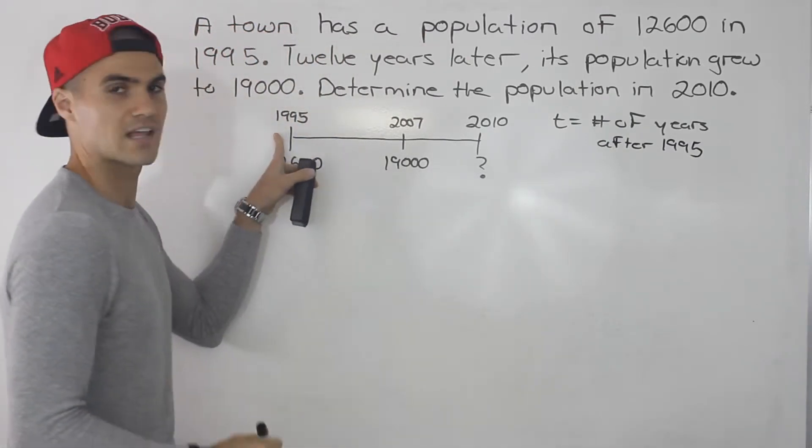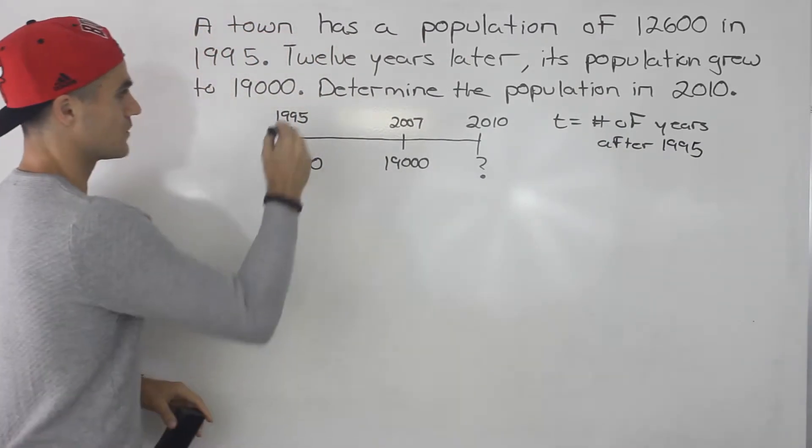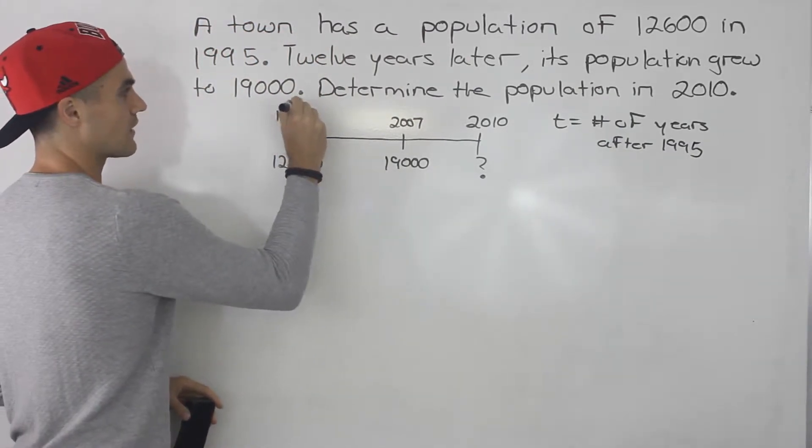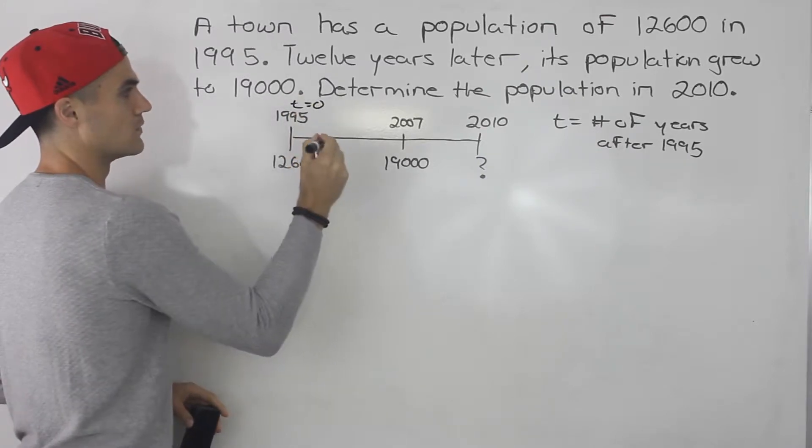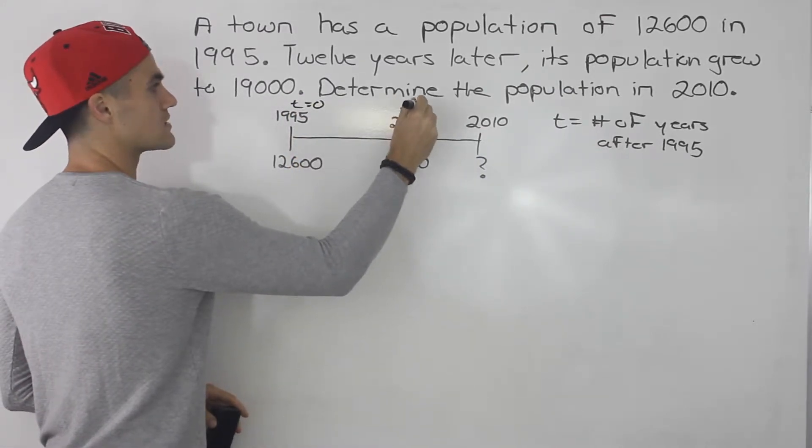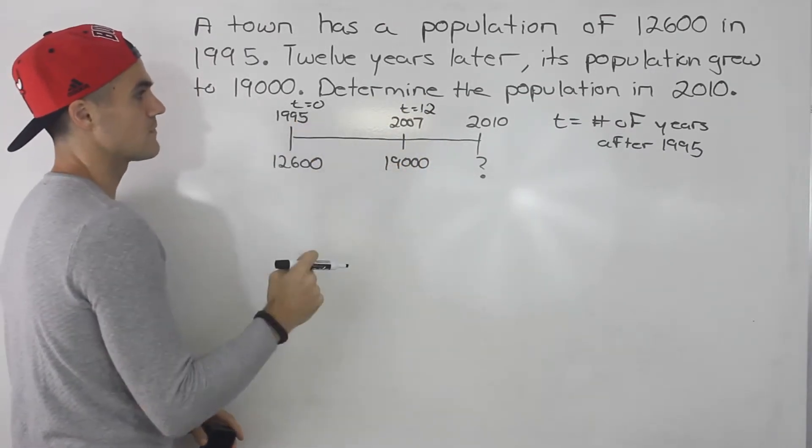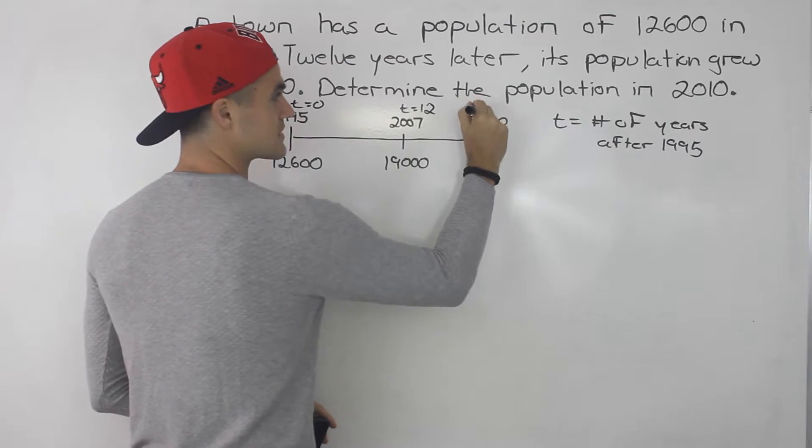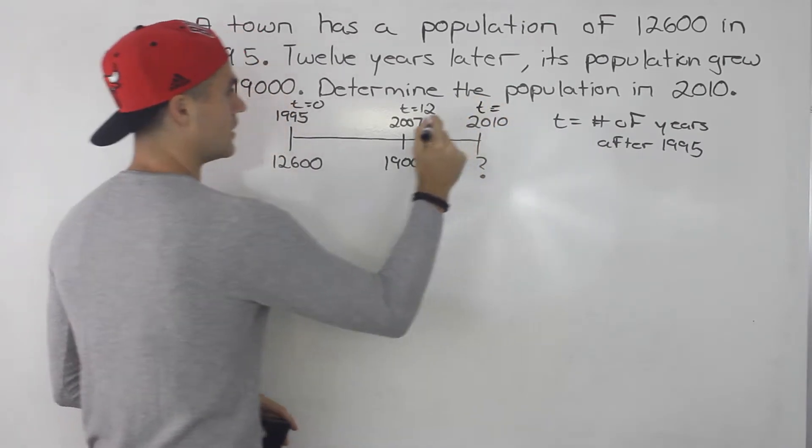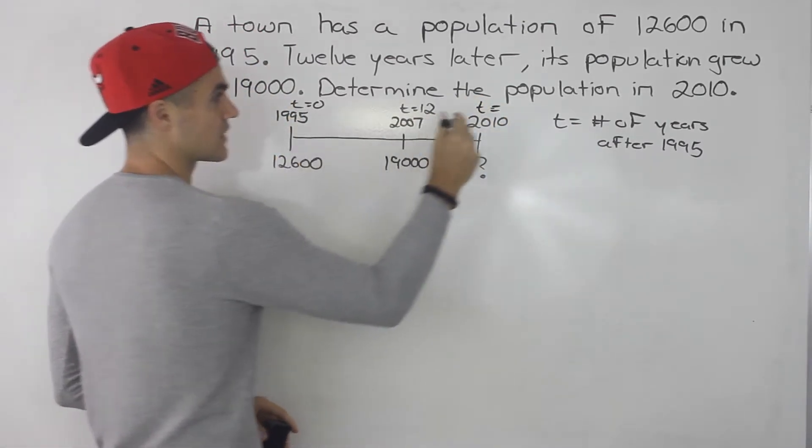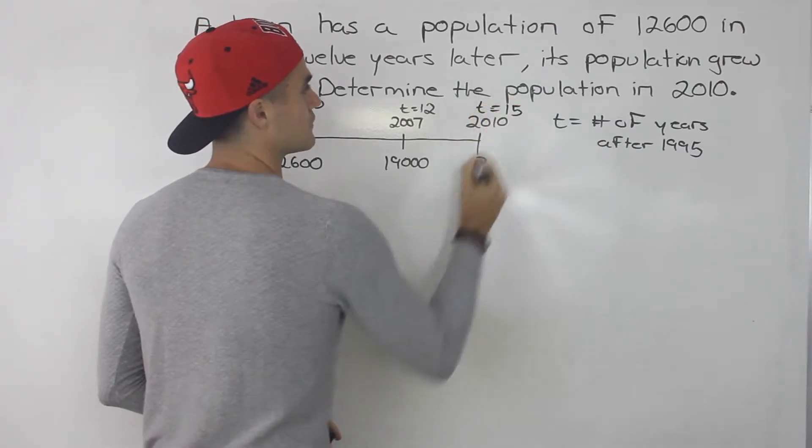Because 1995 is like our starting point. So in 1995 we know the t value is going to be 0. In 2007 the t value is going to be 12, 12 years after 1995, and the t value for 2010 is going to be what? Well, 2010 is 15 years after 1995, so the t value is going to be 15.